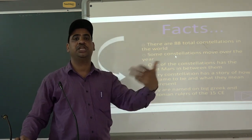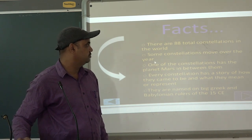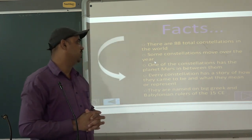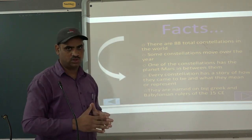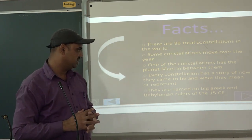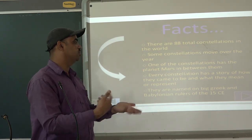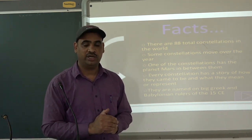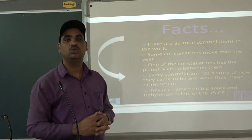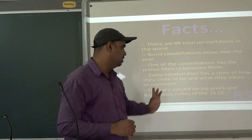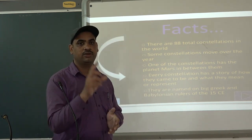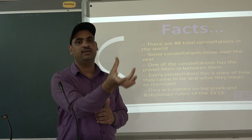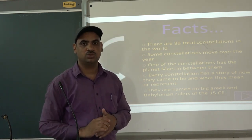Some constellations move over the Earth, meaning they sometimes change their positions — some of them, not all. One of the constellations has the planet Mars in between them. Every constellation has a story of how it came to be and what it means or represents. Most of the names given to constellations are Greek words, given by Greek people. They have certain particular meanings. Sometimes names are given because the constellation looks like a particular animal or shape, and that name is then given to that particular constellation.